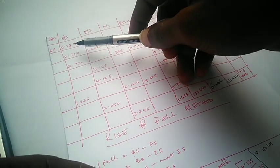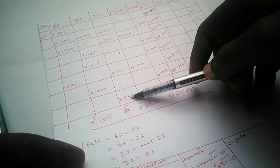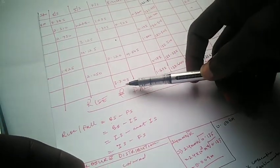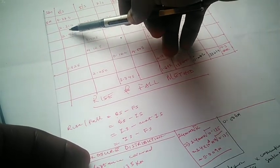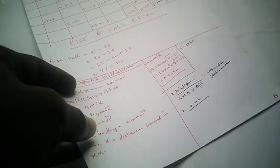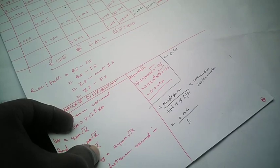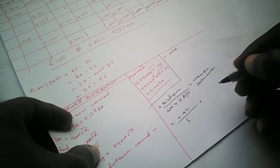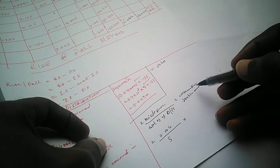We are going to check if the total number of backsights equals the total number of foresights. We have 1, 2, 3, 4 backsights and 1, 2, 3, 4 foresights — they are equal. This total number of backsights, which is the point where you set your instrument up, is also the total number of your stations, and that is equal to 4.